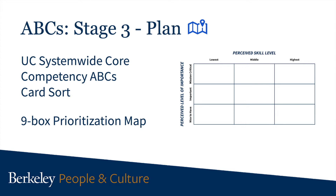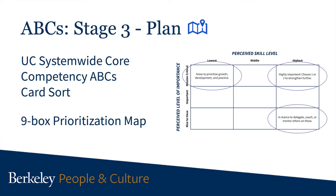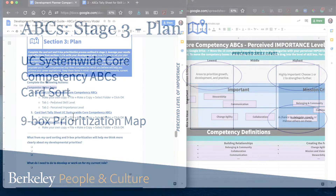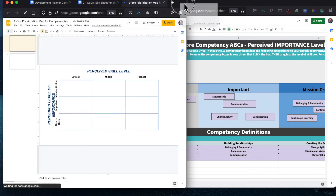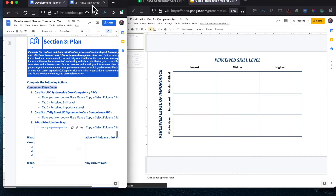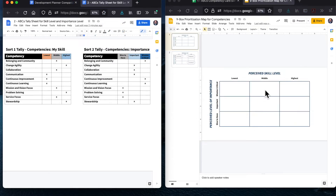Open the nine box grid from your development plan and have your tally sheet open at the same time so you can work with both documents simultaneously. You will notice that the nine box has — you guessed it — nine boxes. Moving horizontally across the top, going left to right, you will notice skill level with lowest, middle, and highest categories. Headed vertically from the bottom to the top, you will notice importance with nice to have, important, and mission critical categories. This is just like plotting points on a graph — don't worry, this is easy and fun to see where things land.